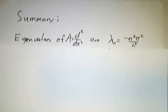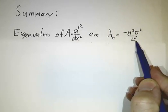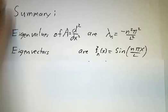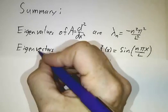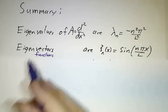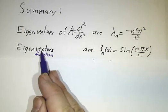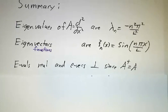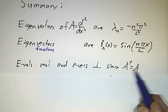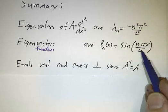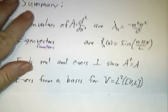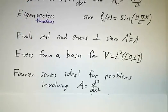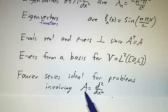To sum up: the eigenvalues of our operator are minus n squared pi squared over L squared. The eigenvectors — sometimes called eigenfunctions because they're functions of x — are sin(n pi x over L), and they live in the vector space L2. The eigenvalues are real and the eigenvectors are orthogonal because the operator is Hermitian. The eigenvectors form a basis, and Fourier series is very useful for problems involving this operator precisely because we're decomposing in a basis of eigenvectors.